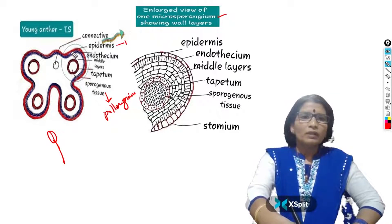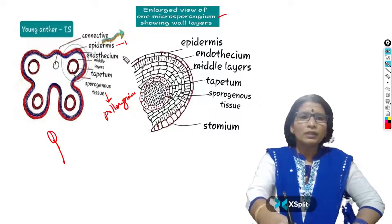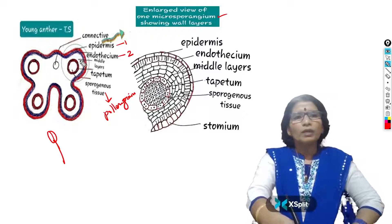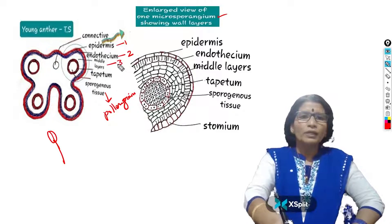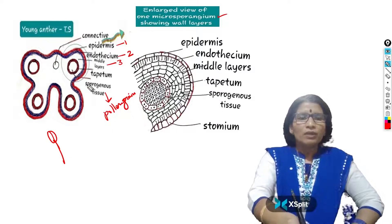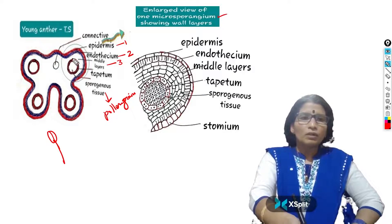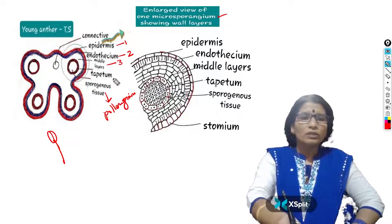The first and outermost wall layer is the epidermis — somewhat thick and red-colored. Below the epidermis is the blue-thick-colored second wall layer, that is the endothecium. Below the endothecium is the white-colored region — the middle layers — that is the third one. And surrounding the sporogenous tissue is a red-and-blue combination thick layer called the tapetum, which is the fourth wall layer.